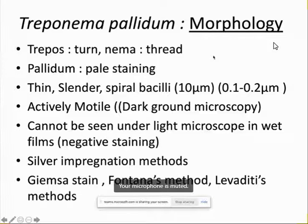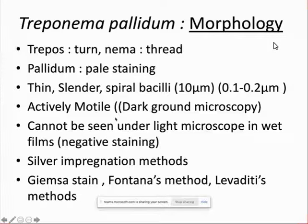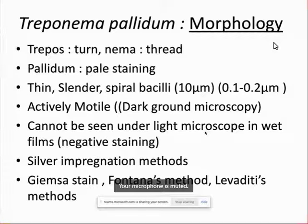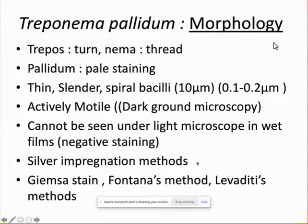Treponema pallidum is very thin and hard to see under the light microscope, so it can be demonstrated by dark field microscopy. They are actively motile using axial filaments they possess — they do not have true flagella but have flagella-like structures on the body surface called axial filaments. They can also be demonstrated by silver impregnation methods, since impregnation with silver stain increases their thickness. Fontana stains, Giemsa stains can also be used.